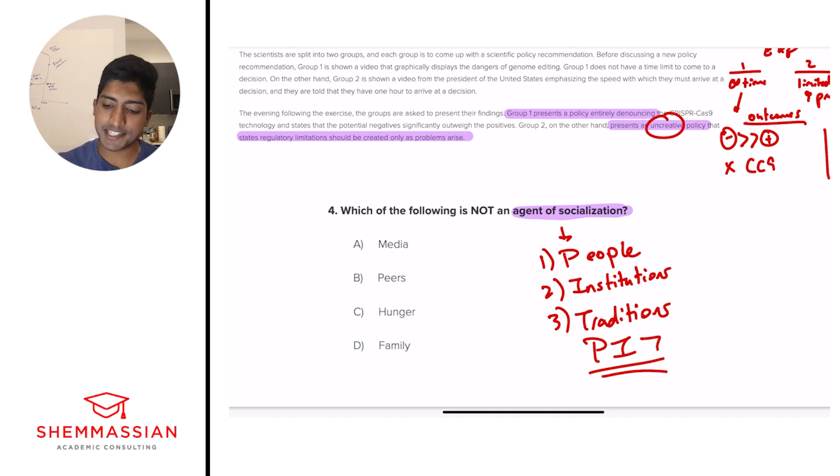And so right away, we can draw lines and sort of figure out what matches what. So we see media is an institution. Media, religion, all these types of groups are institutions. Peers are people. Just the people you work with, people you study with, whatever. Hunger doesn't really have a place in here. It's not a people, it's not an institution or a tradition. So we can eliminate C as not an agent of socialization. And check out D, family. And family also falls into this people, as well as an institution part of it. And so all three of these other answers fall into being agents of socialization. And hunger does not. And with that, we're four for four. Great work.